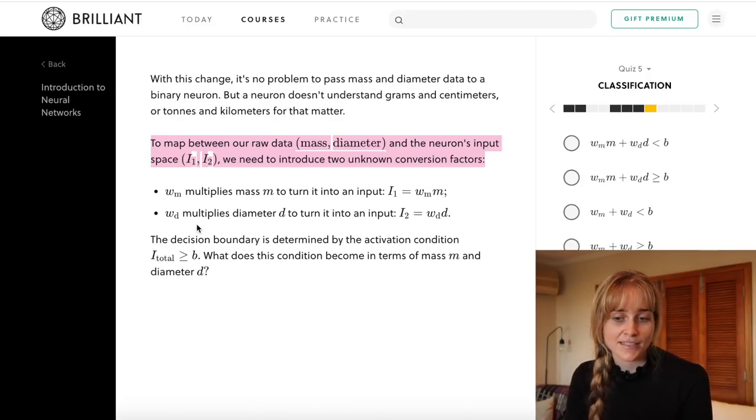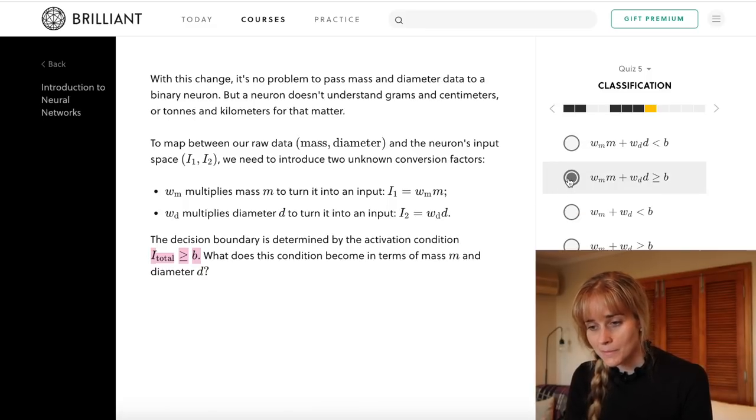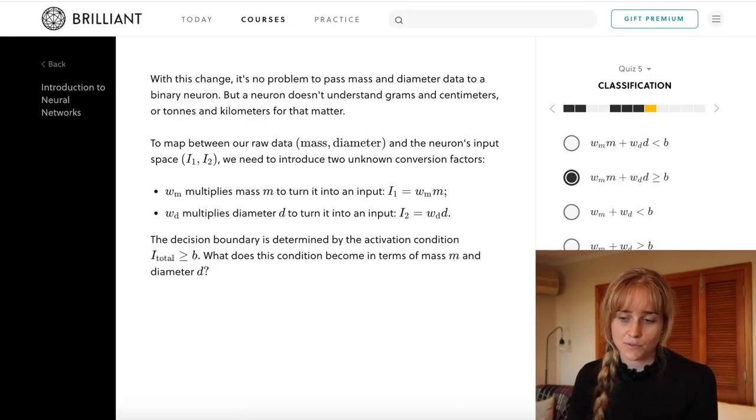Wd multiplies by the diameter to get that total intensity and wm would be the multiplier where you times it by the mass to turn it into input. We still need our total intensity to be greater than or equal to the bias for the neuron to activate, so our new activation equation would be wm times m plus wd times d being bigger than or equal to the bias.